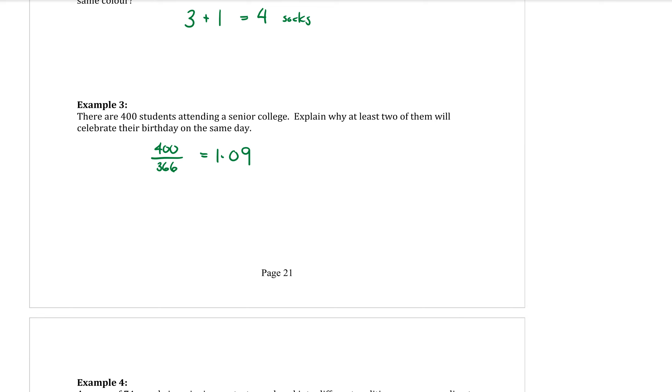So you just do that little sum and then you write a little therefore, because it did say explain, therefore, as there are more than 366 students, at least two of them have their birthday on the same day. So you just had to be able to show that and explain that in some way.